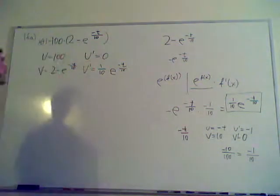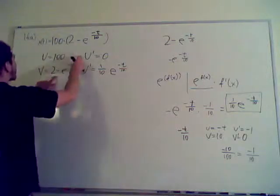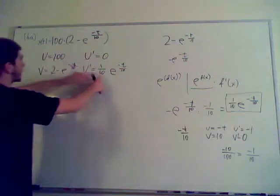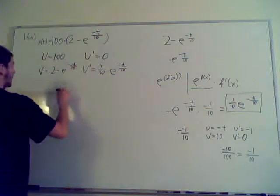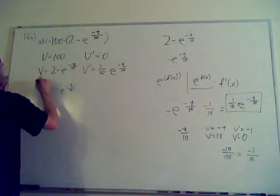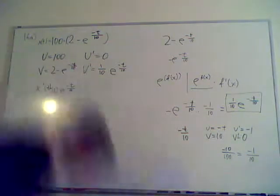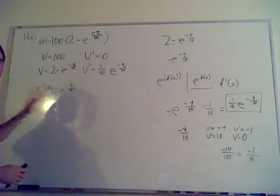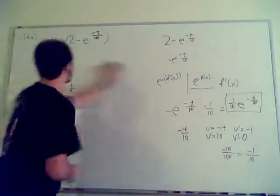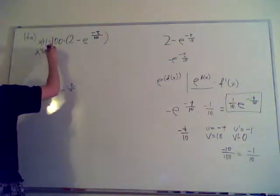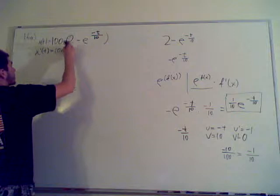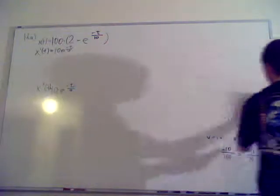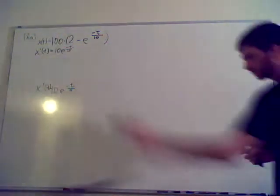Now you get to do the product rule for this guy. So this whole thing goes away which is awesome, because this is 0. So you do this part: 100 times 1 over 10 simplifies as 10 times e to the negative t over 10. And that is x prime of t. Let me check if that's right. Yep that's right, excellent. That's your answer. Alright, I hope you got it, but we're gonna move on.